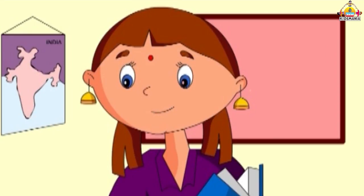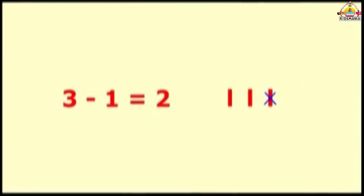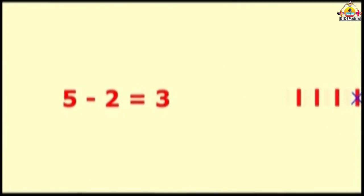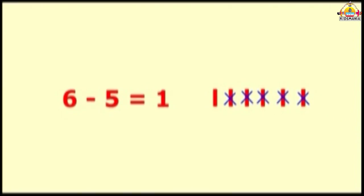Let's learn simple subtraction by row method. 4 minus 2 is 2. 3 minus 1 is equal to 2. 5 minus 2 is 3. 6 minus 5 is equal to 1.